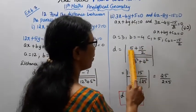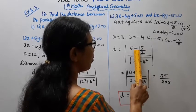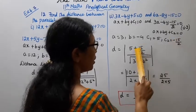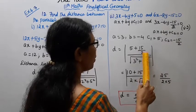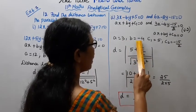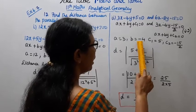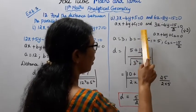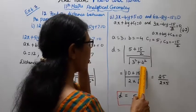C1 is 5, minus C2. Minus of minus is plus 15 by 2. Root of A square plus B square: 3 square plus 4 square.